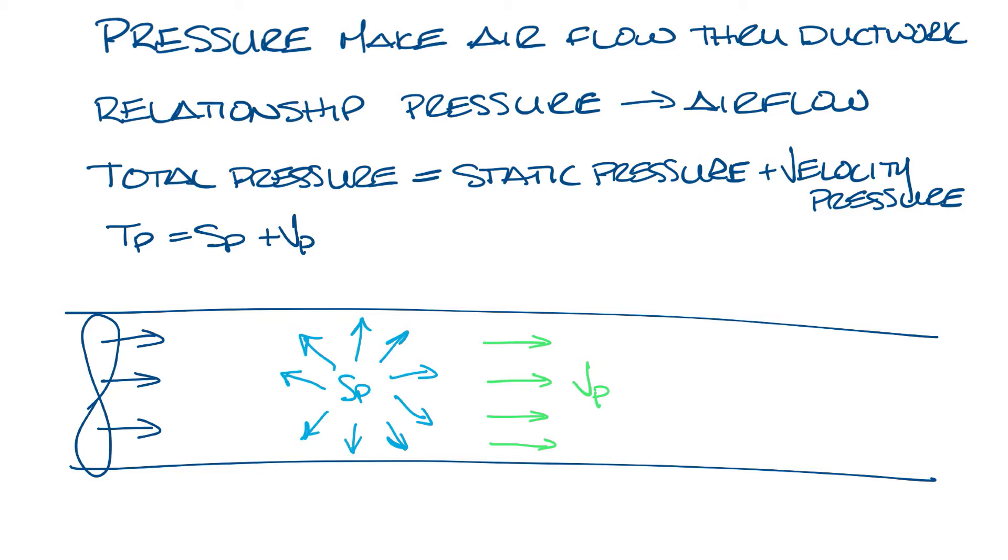The thing is, velocity pressure is hard to measure directly because there's static pressure in the direction of air flow as well, so we usually use total pressure and static pressure to calculate velocity pressure, or VP equals TP minus SP.